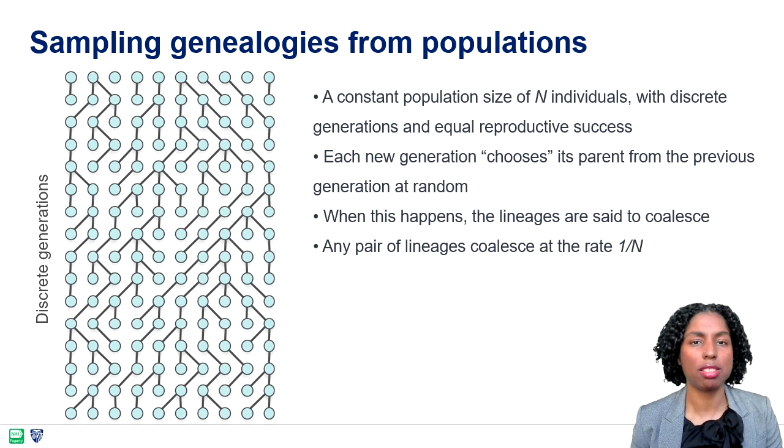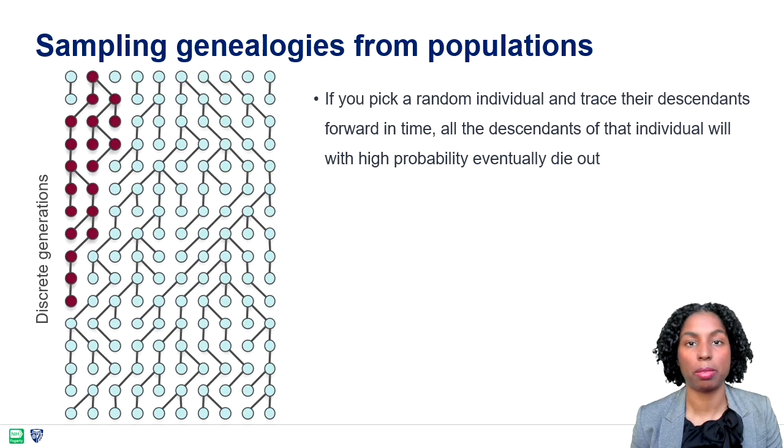Let's assume a constant population size of N individuals with discrete generations and equal reproductive success. Each new generation chooses its parent from the previous generation at random. When this happens, the lineages are said to coalesce. The rate of coalescence is inversely proportional to population size. If you pick a random individual and trace their descendants forward in time, all the descendants of that individual will, with high probability, eventually die out.